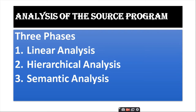The second is radical phase, in which characters or tokens are grouped hierarchically into nested collections with collective meaning. The third is semantic analysis, in which certain checks are performed to ensure that the components of a program fit together meaningfully.